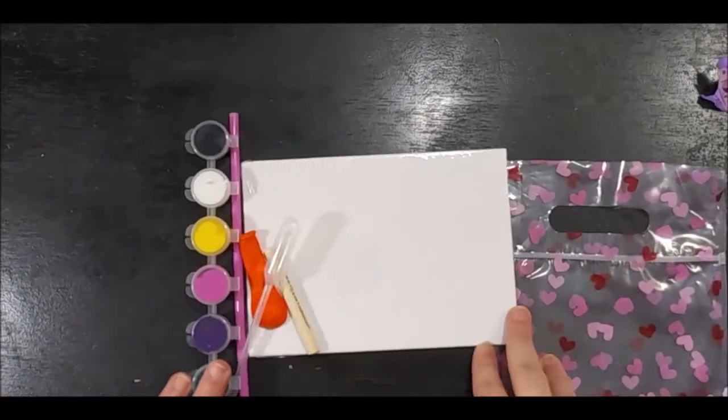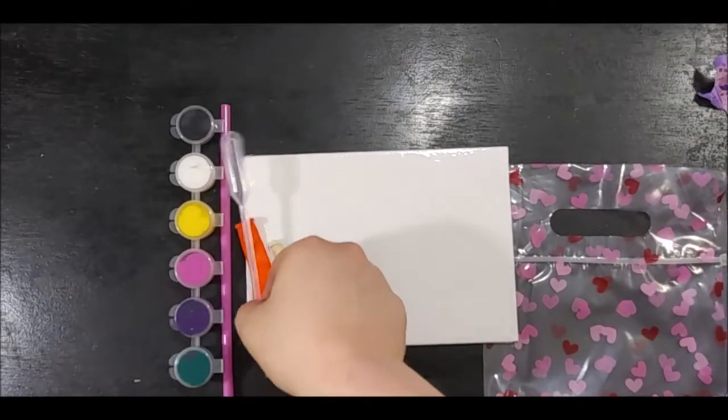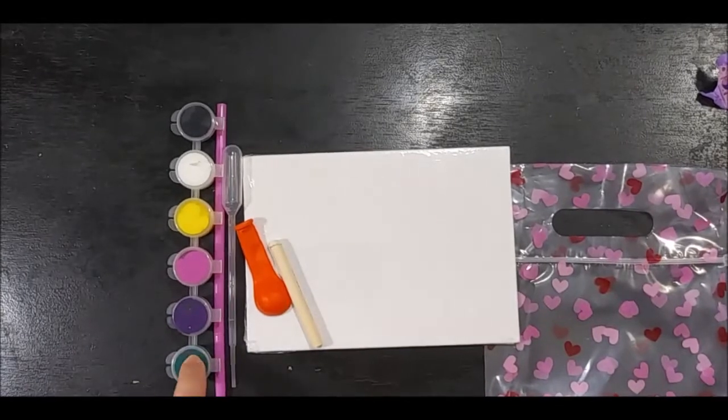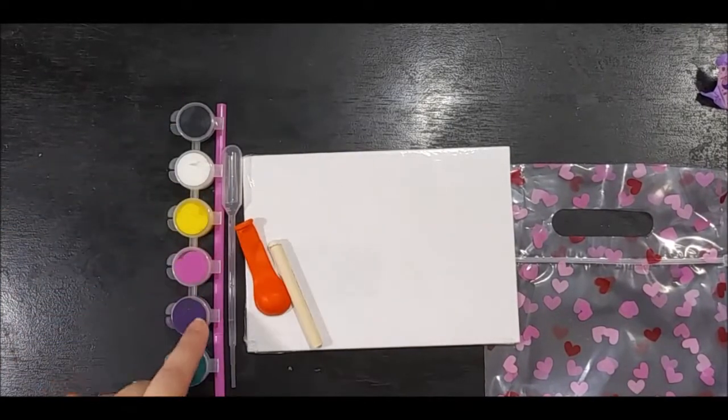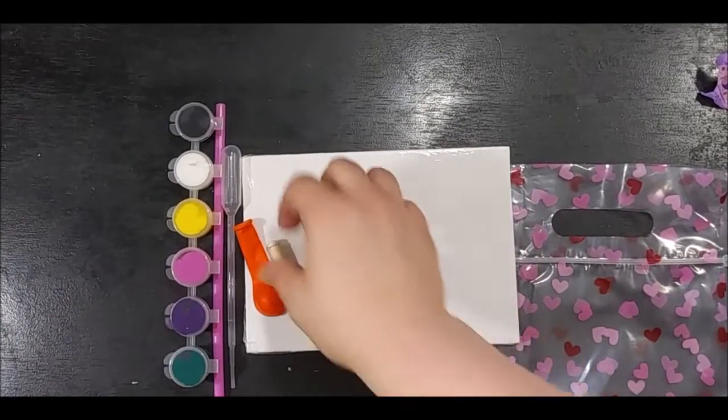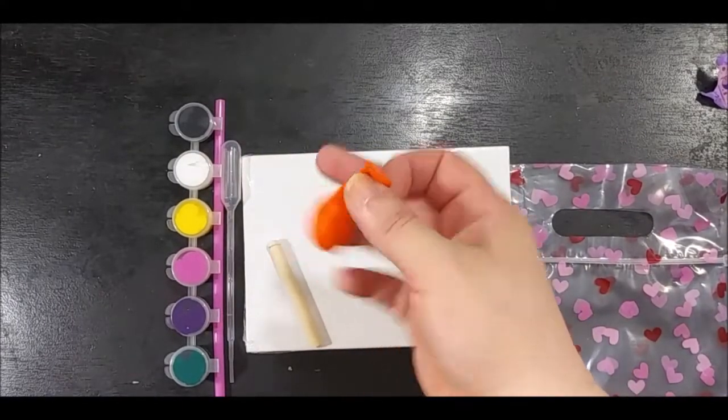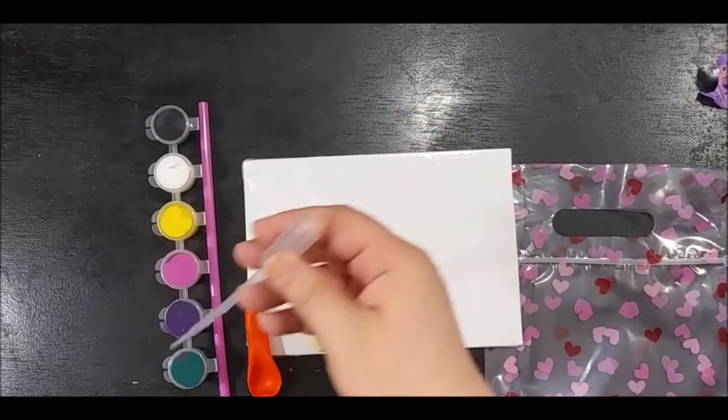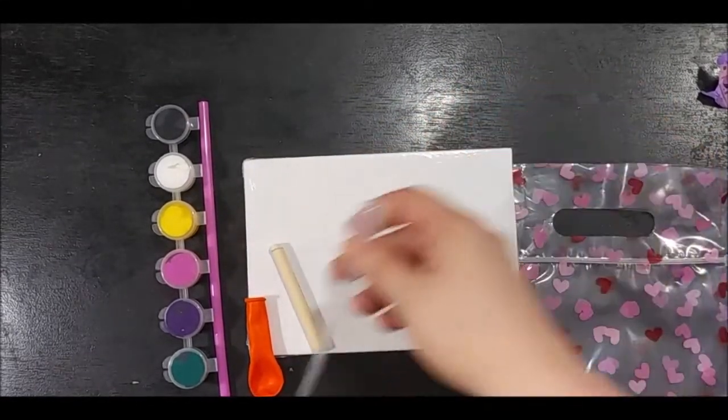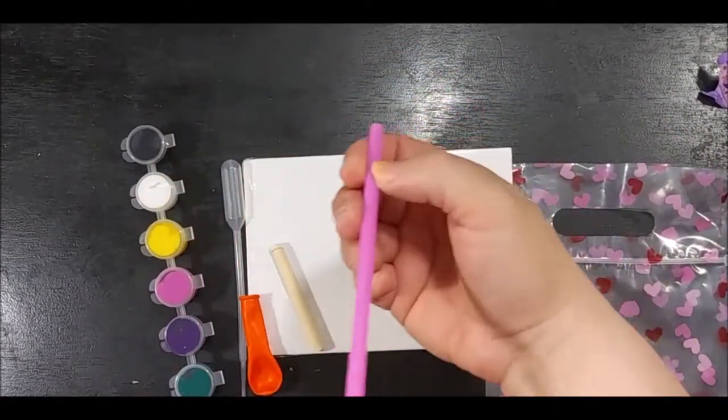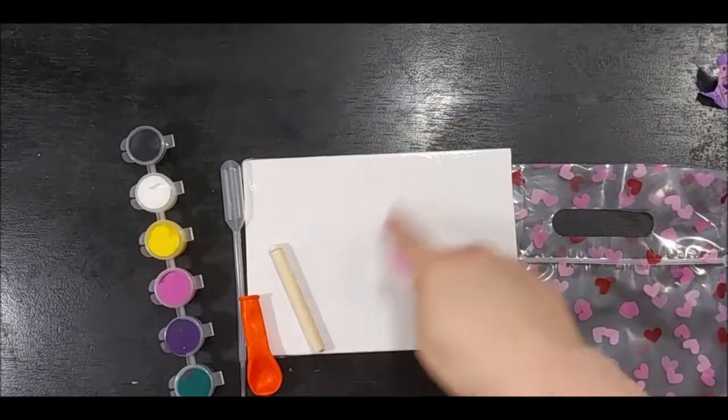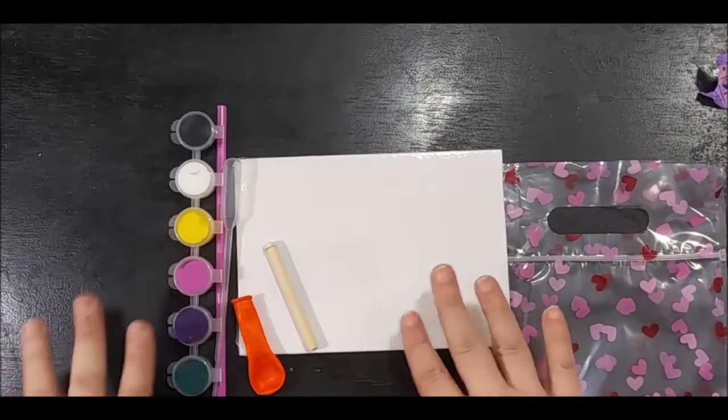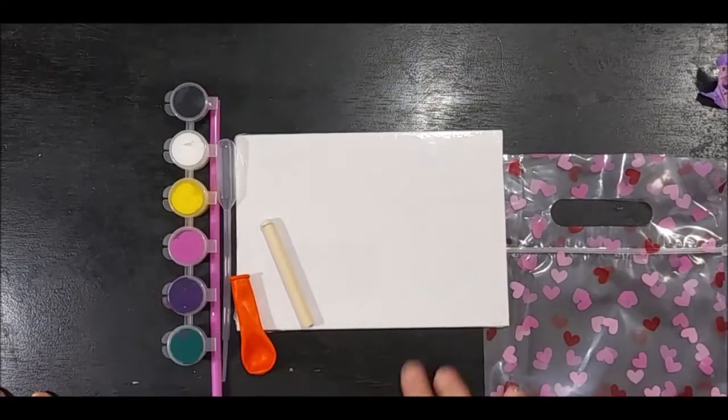She showed on her channel when she did her opening how to do this. She also suggested that you put a little bit of water with this. It's to make an abstract painting where you can use the balloon as a dauber, you can use the pipette and put some here, and the straw is to blow and make marks. If you'd like to see me attempt this, let me know in the comments below.